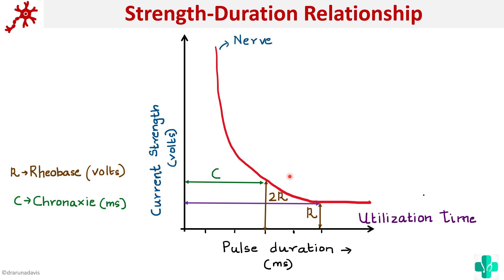This is the curve for a nerve. Now suppose we draw a curve for a muscle — how will it look? We know that nerve is much more excitable than muscle. So naturally the curve for muscle would be shifted, showing that more current and more time would be required to excite the muscle. This is the concept of the strength-duration relationship.